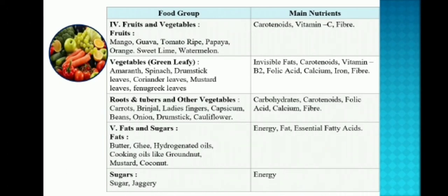In roots and tubers and other vegetables: carrots, onion, potato, brinjal, lady's finger, drumstick, cauliflower, capsicum, etc. The nutrients contained are carbohydrates, carotenoids, folic acid, calcium, and fiber.